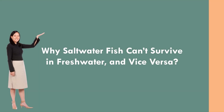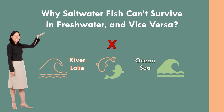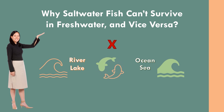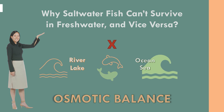Why can't saltwater fish survive in freshwater and vice versa? Saltwater fish and freshwater fish have different physiological adaptations that allow them to live in their respective environments. These adaptations are related to the osmotic balance of their bodies and the concentrations of salt and other substances in the water.